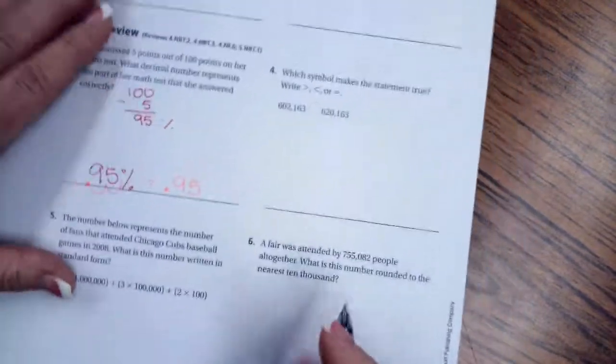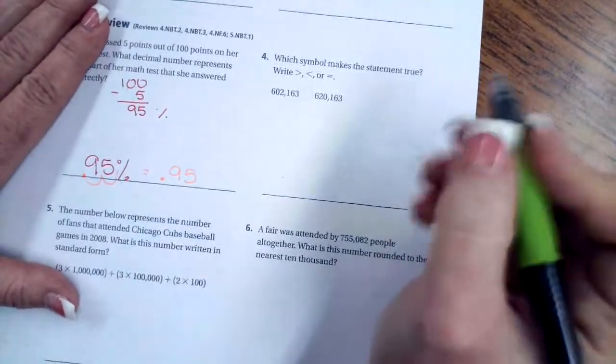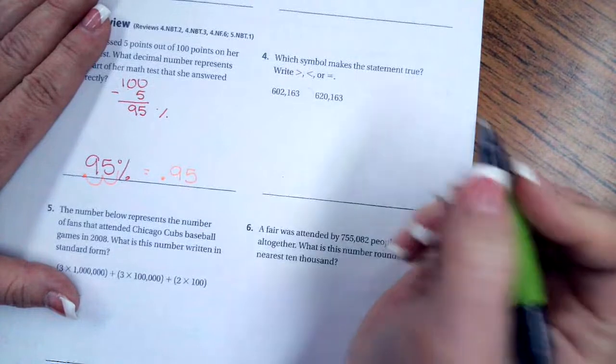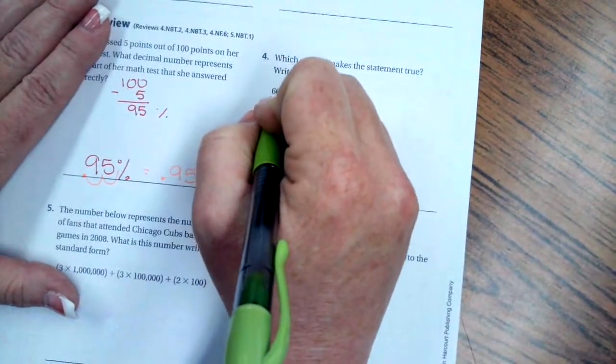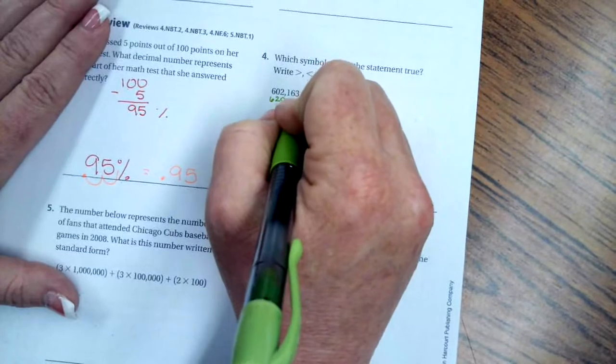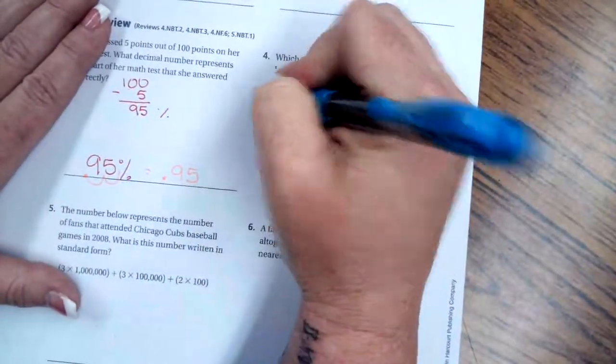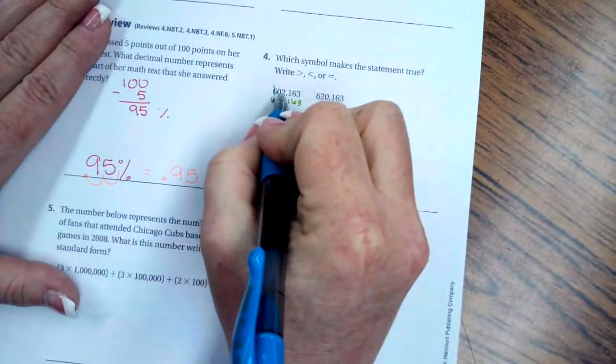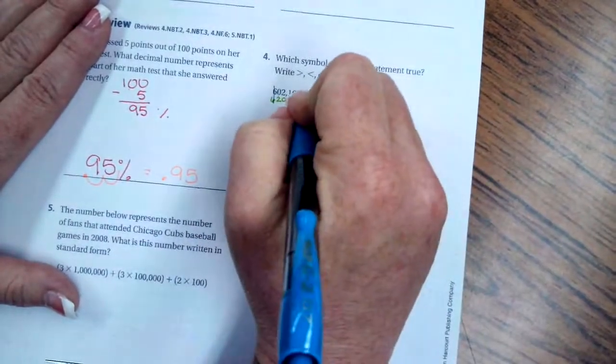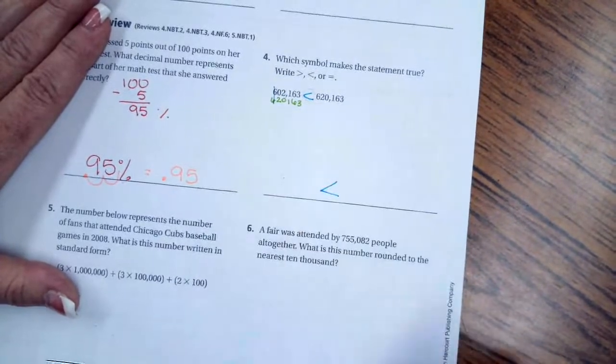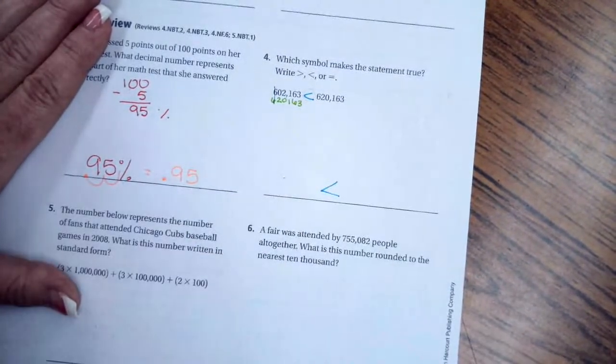Which symbol makes the statement true? So I'm going to take this number and I'm going to write it underneath this number so that we can compare them. So six-two-zero-one-six-three. We can see our sixes are the same. The two though is bigger than the zero, which means greater than.